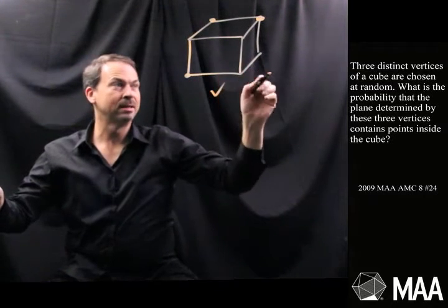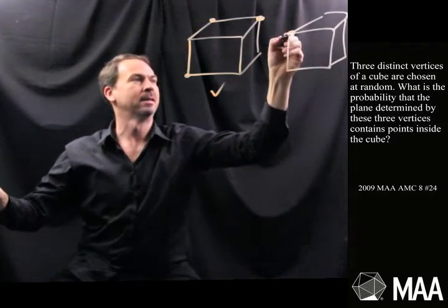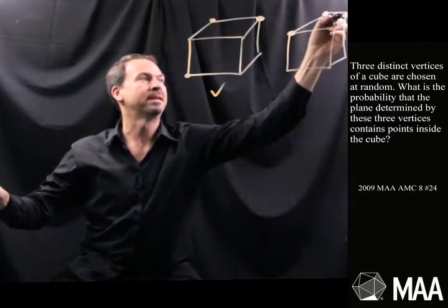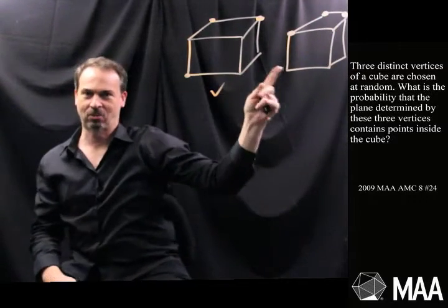Could a plane not cut through the inside? Well, actually, yeah. It could happen if, say, the three vertices were on the same face, in which case the plane would actually match the face and fail to go through the inside of the cube.